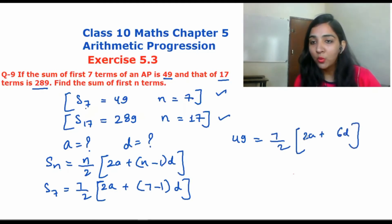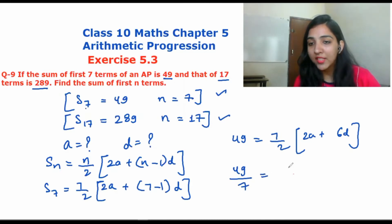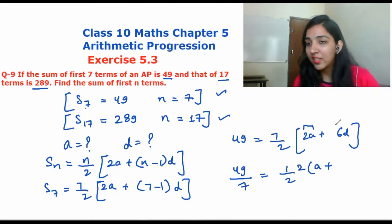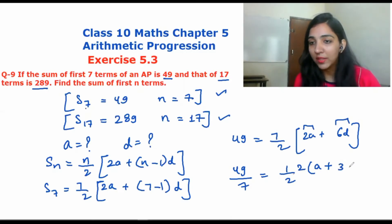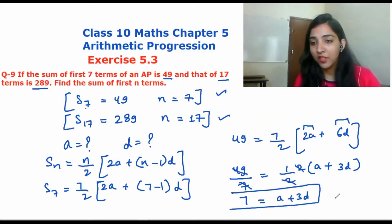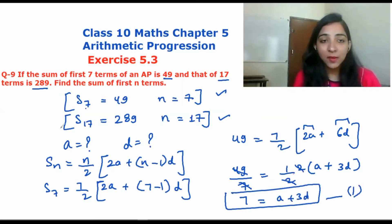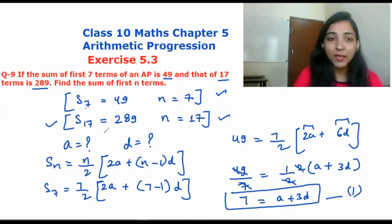So 49 = 7/2 × (2a + 6d). Dividing 49 by 7 gives 7, and simplifying: 7 = a + 3d. This is our first equation.